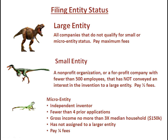A micro entity is an independent inventor — an individual person — that has fewer than four prior patent applications and has a gross income no more than three times the median household income, which is about one hundred and fifty thousand dollars. So if you are making less than one hundred and fifty thousand dollars, you may qualify to be a micro entity.